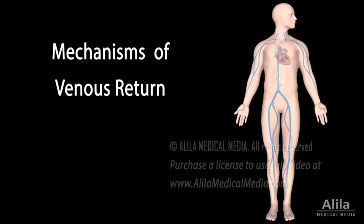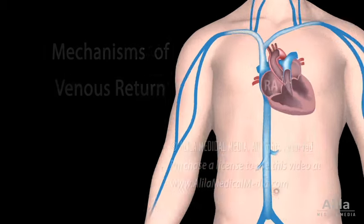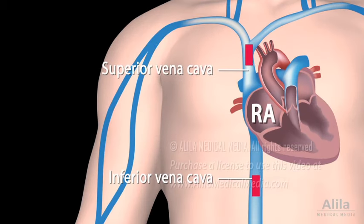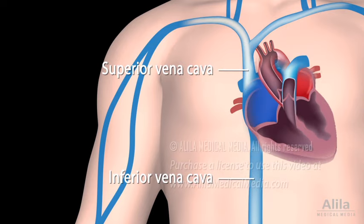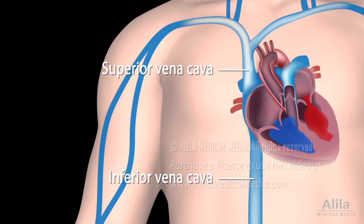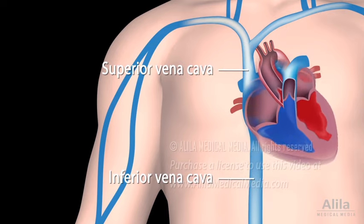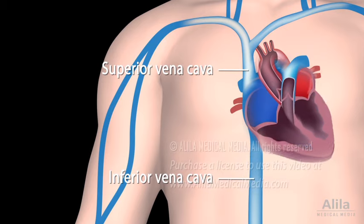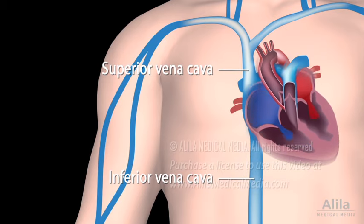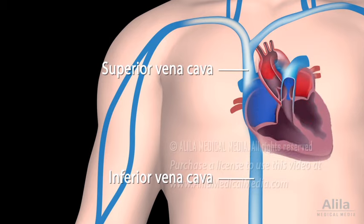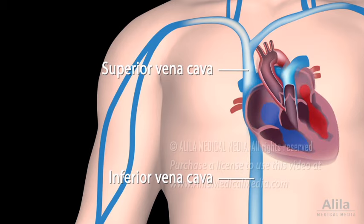Venous return is the flow of blood from the periphery back to the heart's right atrium. Venous return is important because the more blood returns to the heart, the more blood can be pumped out. In other words, venous return is the major determinant of cardiac output.